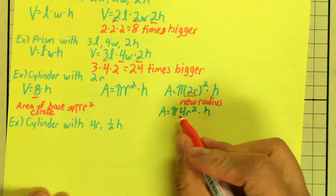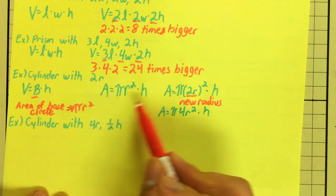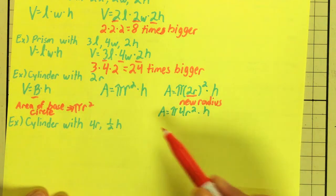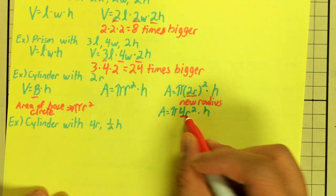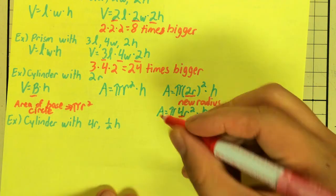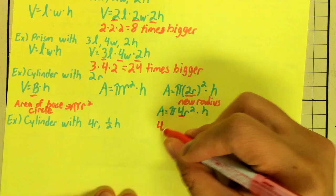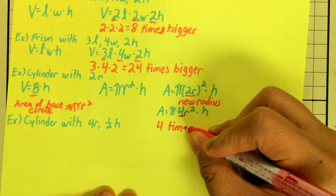Comparing my original formula with the old formula, I see there's a 4 that's different. So, this tells me that my volume is 4 times bigger.